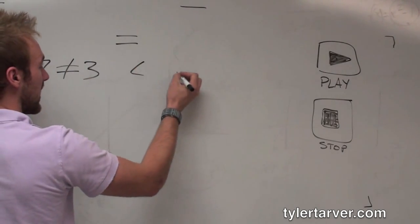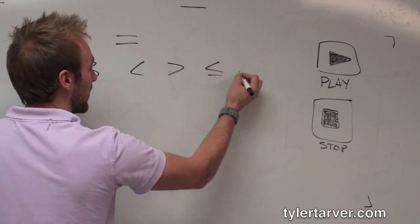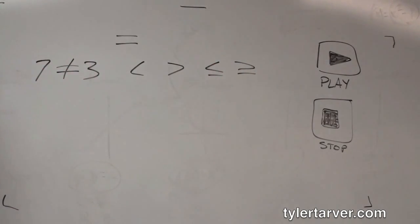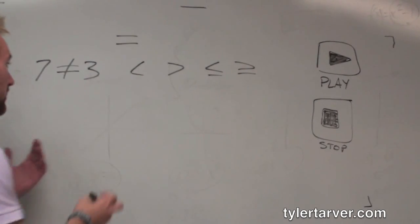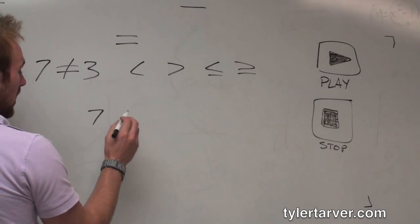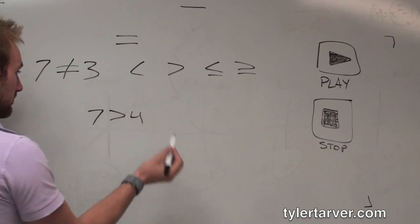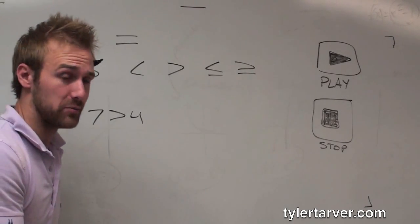We've got less than, we've got greater than, and then we've got those things again with a little line underneath. This means that something is bigger than something else, like 7 is greater than 4. Would y'all say that's true? I hope so.